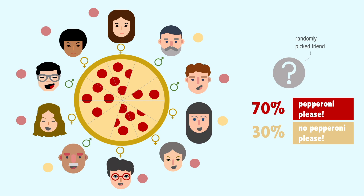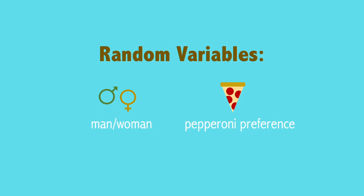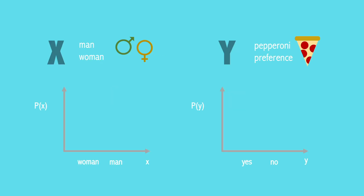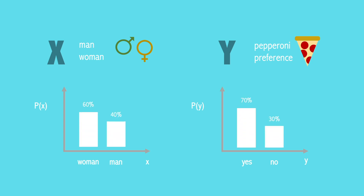In this example, there are two random variables. The first random variable is whether a friend is a man or a woman, and the second random variable is pepperoni preference. Let's call the first random variable X and the second random variable Y. If we were to plot the probability distributions of these random variables separately for X and Y, we can observe each probability distribution individually.